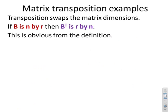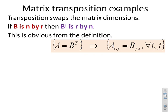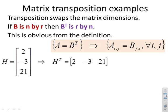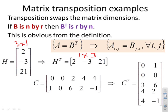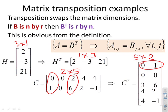Transposition swaps the matrix dimensions: if B is N by R, then B transposed is R by N. For example, if H is a 3 by 1 matrix containing 2, −3, 21, then H transposed is 1 by 3. Similarly, if C is 2 by 5, then C transposed is 5 by 2, and the first column of C becomes the first row of C transposed, the third column becomes the third row, and so on.